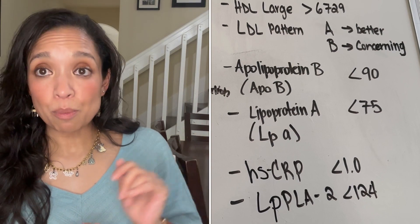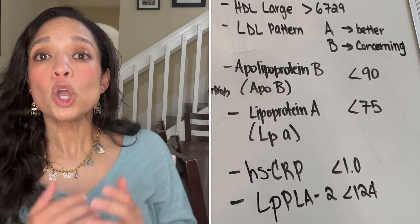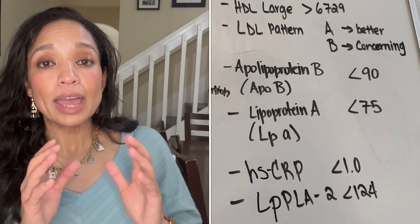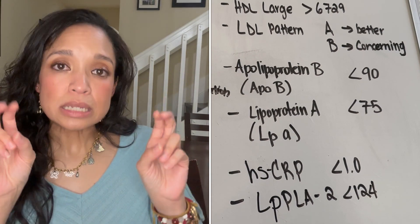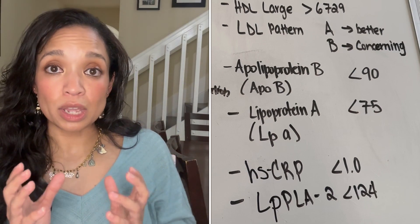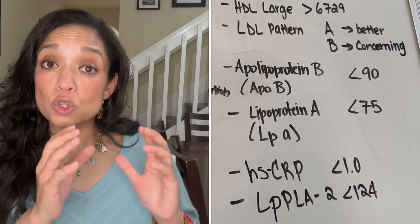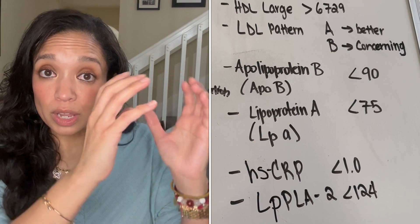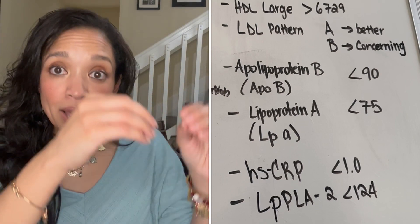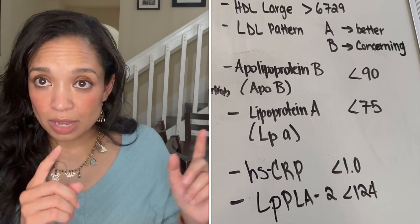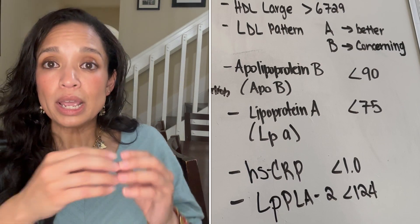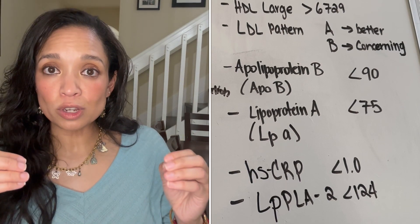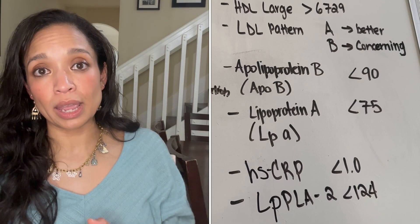Along with the ApoB we mentioned another thing called your LP little a. The LP little a, again in its most simplistic sense, tells us how sticky the cholesterol within your body is going to be. So again, you have this bigger cholesterol molecule, it's got fats and things inside of it, it's got some ApoB on the outside, and then attached to it is going to be an additional structure which is what we're looking at with this LP little a.